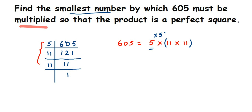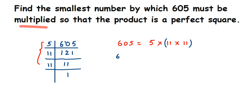So what is the smallest number to be multiplied so that 605 becomes a perfect square? If we had another 5, then 5 would also form a proper pair and the number would become a perfect square. Therefore, the smallest number to be multiplied is 5. We need to introduce one extra 5 by multiplying both sides by 5.